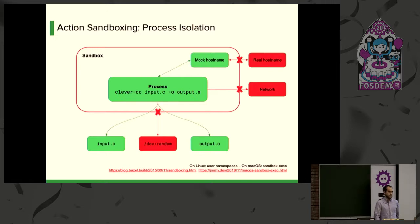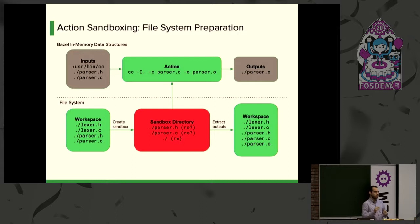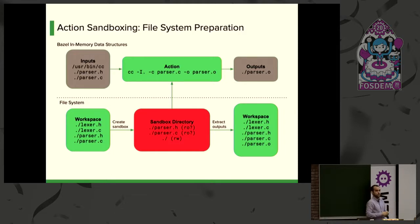What we want to look into is how we actually prepare the file system for the sandbox to work. We create a kind of true environment for the command. When we want to run the CC binary, instead of running it in the source tree, we create a separate sandbox directory that contains only the things we want the compiler to have access to. We create this sandbox before running the action, execute the command inside it, and then extract the outputs back to where they belong.